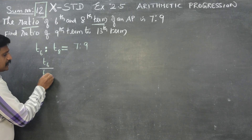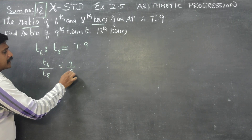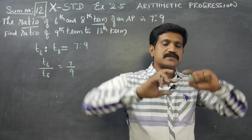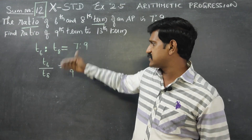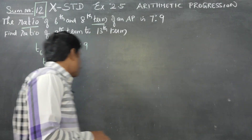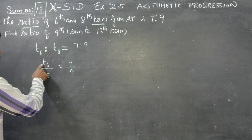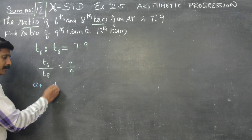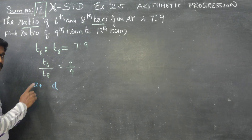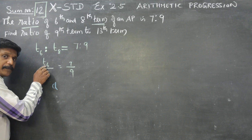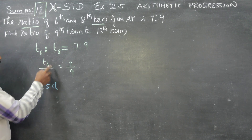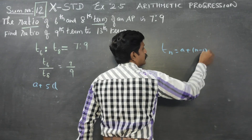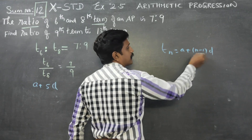T6 divided by T8 is equal to 7 by 9. The 6th term formula: T6 is equal to A plus N minus 1 into D. For example, applying the general AP term formula.